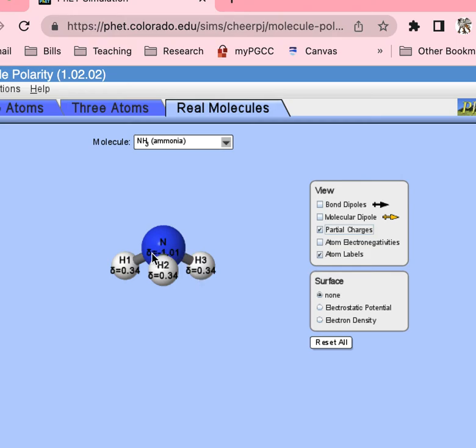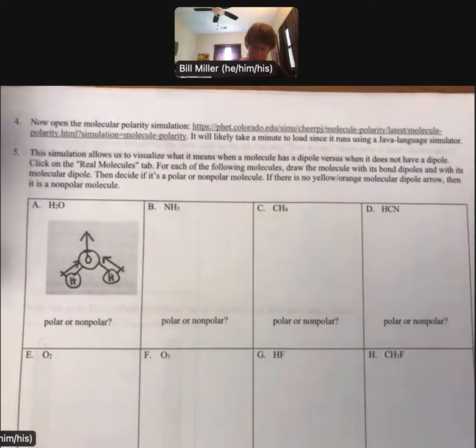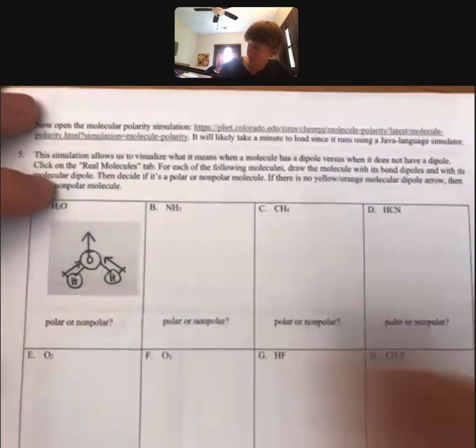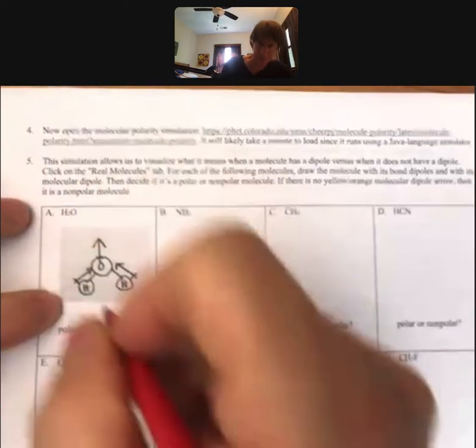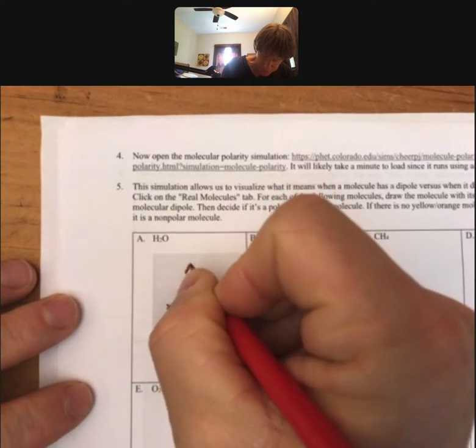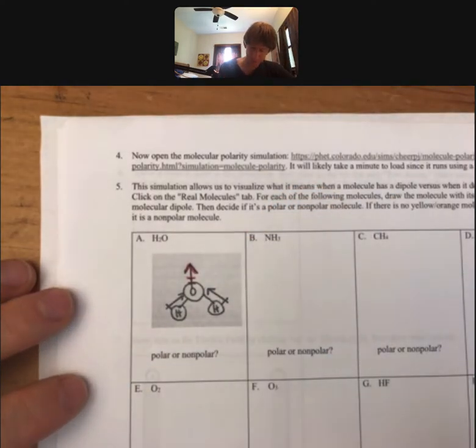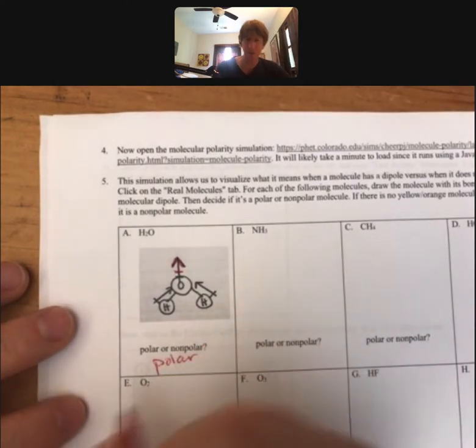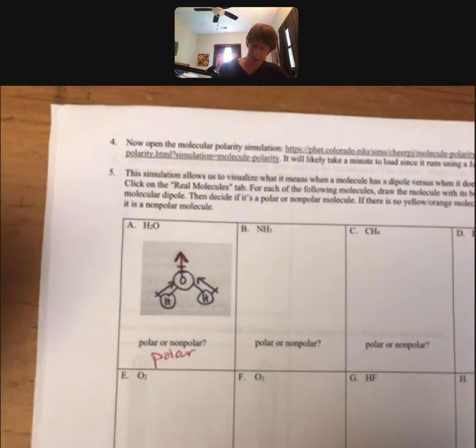So we'll be drawing all of these parts, although you don't need to list the partial charges. Let's go back to our page now so I can fill it in. So things that I'm missing from my water. So first off, my dipoles, I'm going to do my molecular dipole in red pointing up like that. And is this a polar or not? So anyone that has a molecular dipole is a polar molecule.